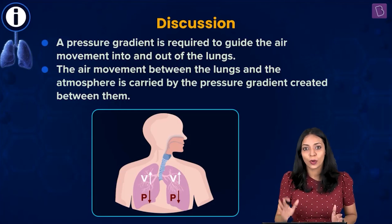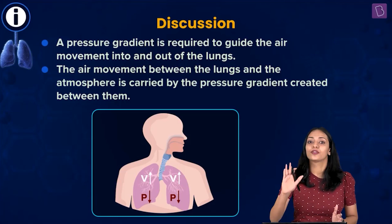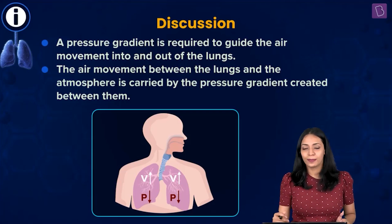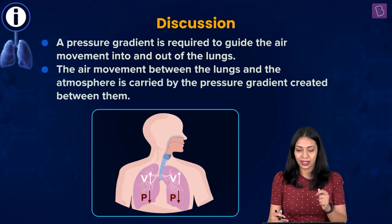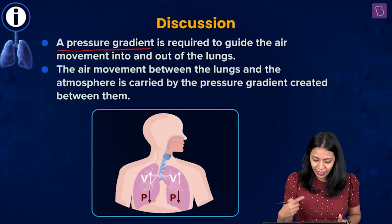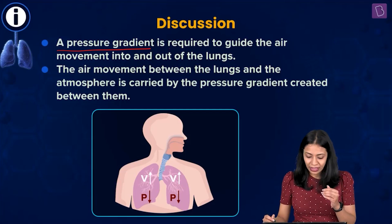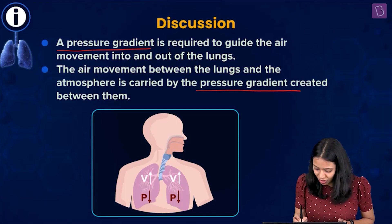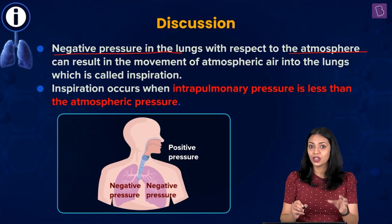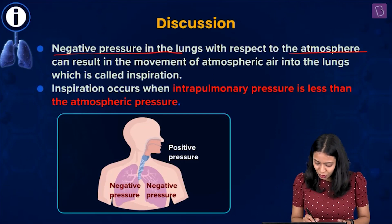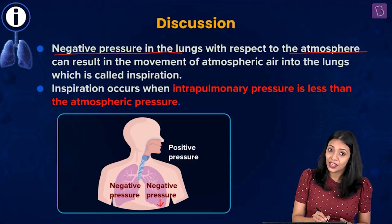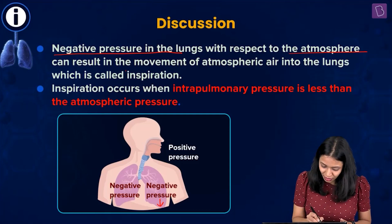During inspiration, we take in air from the atmosphere into our lungs, which means atmospheric pressure must be greater than intrapulmonary pressure. A pressure gradient is required to guide the movement of air into and out of the lungs. Negative pressure in the lungs with respect to the atmosphere — meaning pressure inside the lungs is less than atmospheric pressure — results in the movement of atmospheric air into the lungs, which is known as inspiration.